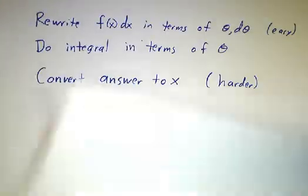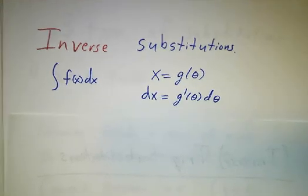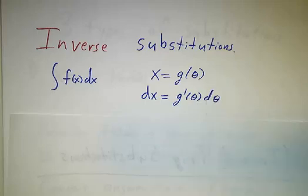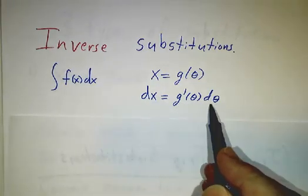We're gonna do something that's a little bit inverted from that. Instead of letting u be a function of x, we'll let x be a function of the other variable, which we'll call θ because it's almost always an angle. And then you figure out what dx is in terms of dθ by taking a derivative.